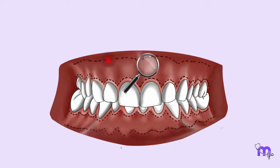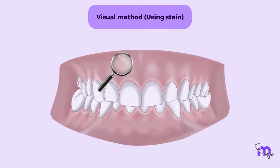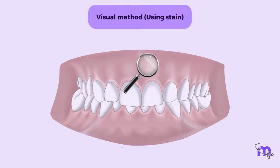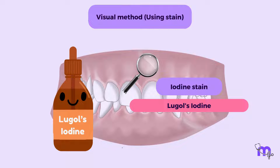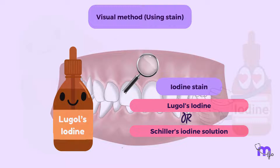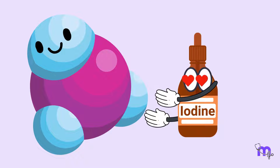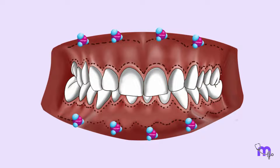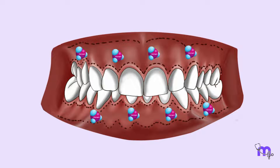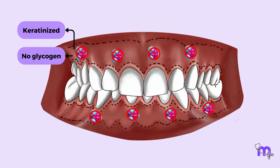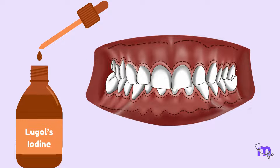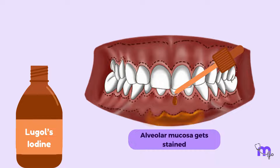Now, let us move on to determining the mucogingival junction by the visual method using a stain. The mucogingival junction can be located using an iodine stain, such as Lugol's iodine or Schiller's iodine solution. Iodine has an affinity to glycogen. Alveolar mucosa is rich in glycogen and readily takes up the stain. The attached gingiva, which is keratinized, has no glycogen in the most superficial layer and hence does not get stained. Thus, Lugol's iodine solution stains only the alveolar mucosa and clearly demarcates the mucogingival junction.